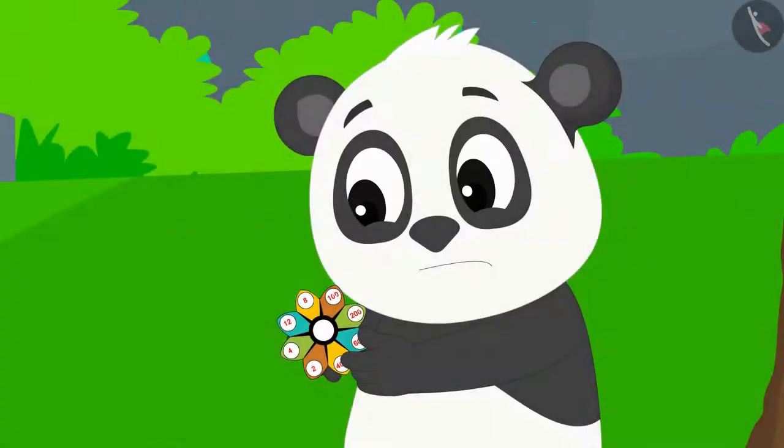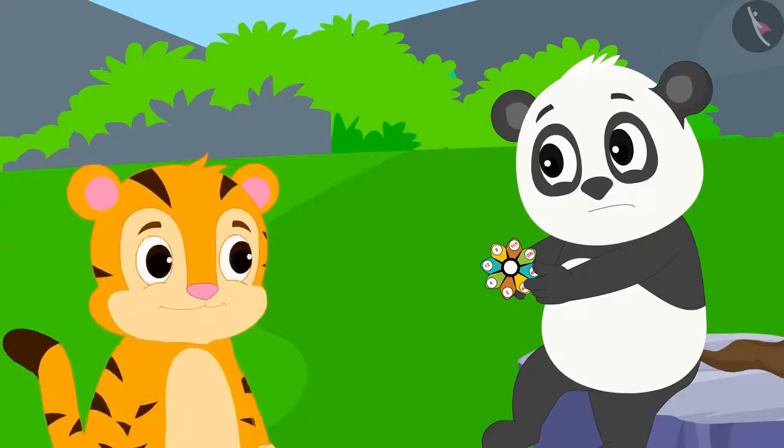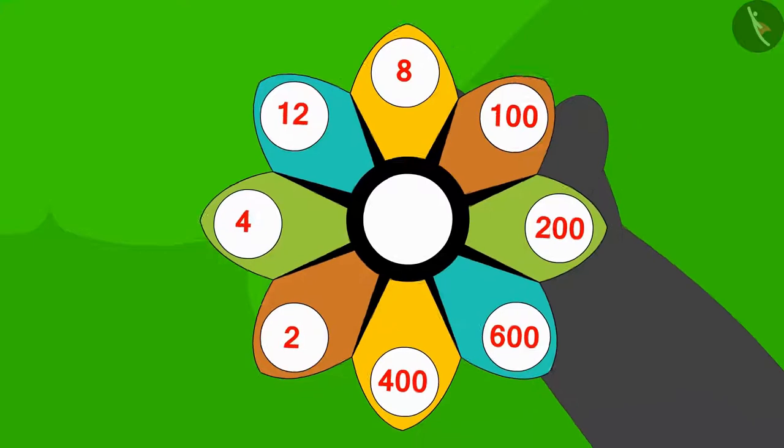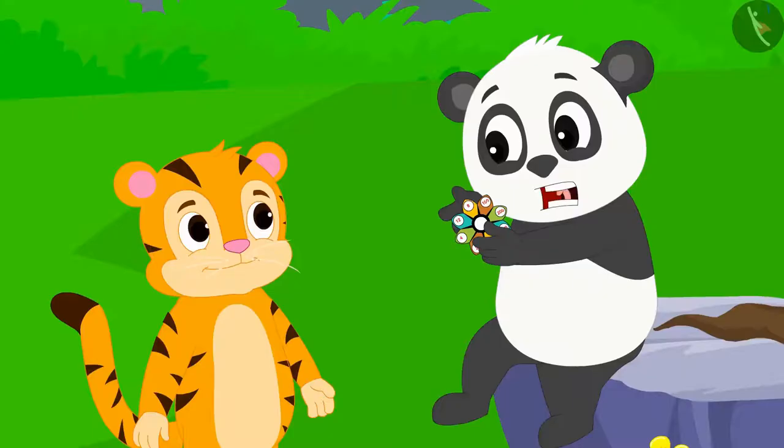Finally he thought of taking help from his friend Share Khan. 'Share Khan, I bought this toy from the market but to run it I have to solve a math puzzle written on it. If you can help me solve it we can both play with this toy together,' Golu told Share Khan.